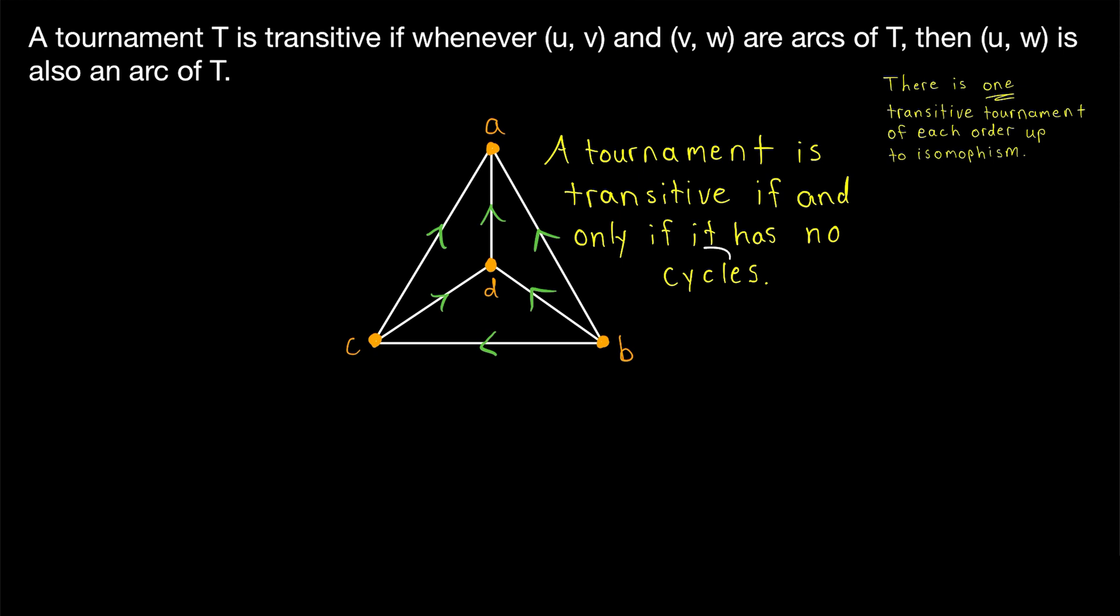Just to give you an idea of why cycles are a problem in transitive tournaments, what would happen if we made this a three cycle by reversing the direction of this arc? So if we make this arc go from A to C, now we have a cycle. But remember, we still want this to be transitive, so since C is adjacent to D and D is adjacent to A, we still need C to be adjacent to A. But then we've got two arcs between the same pair of vertices, which isn't allowed in a tournament.